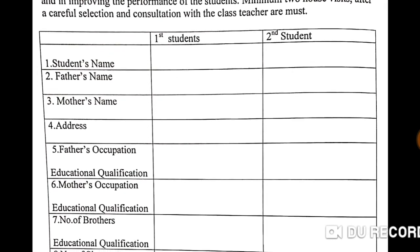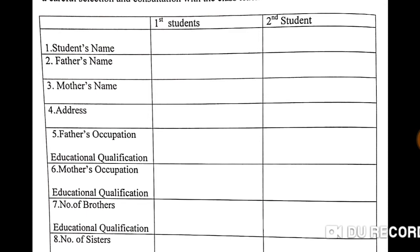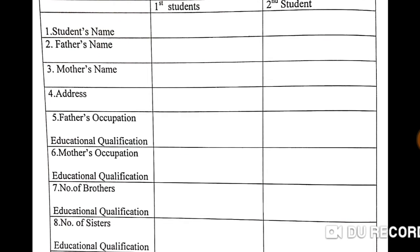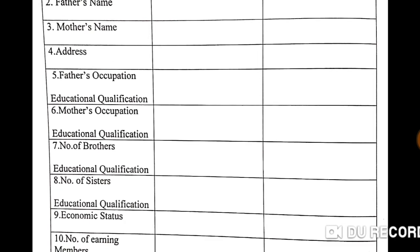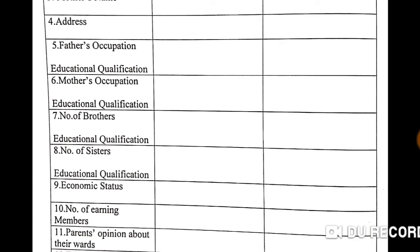For collecting information, I am providing you a simple format. With the help of this format, you can collect the information and write a report. First you have to write the name of the student; second row, father's name; third row, mother's name; fourth row, address; fifth row, father's occupation and educational qualification; sixth row, mother's occupation and educational qualification; then number of brothers, and after that number of sisters.